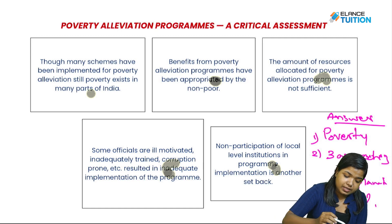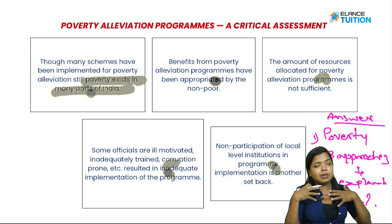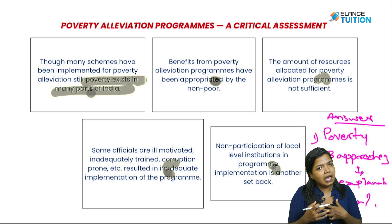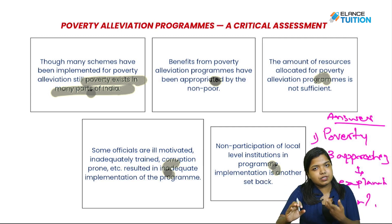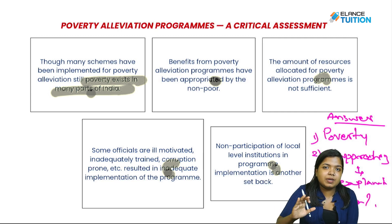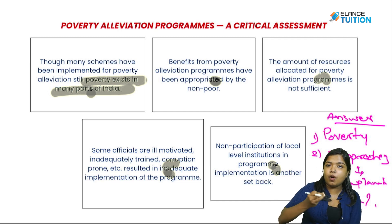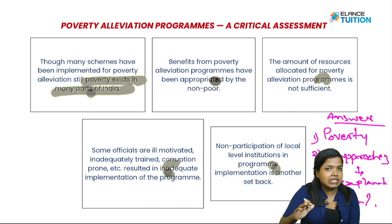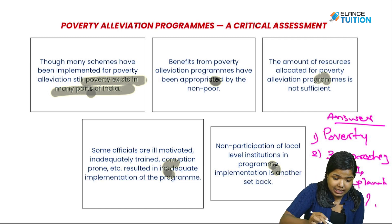With the critical assessment, we have implemented these schemes. Poverty alleviation still exists in many parts of India. We are in Kerala. When compared to other states in our country, Kerala is far better, but poverty still exists. If we did not execute the program properly, we were not able to do that. Benefits from poverty alleviation programs have been appropriated by the non-poor.